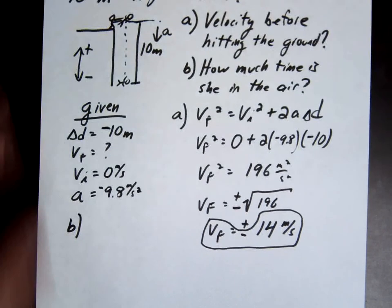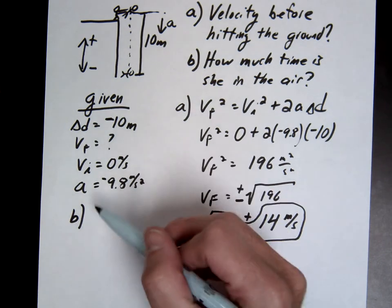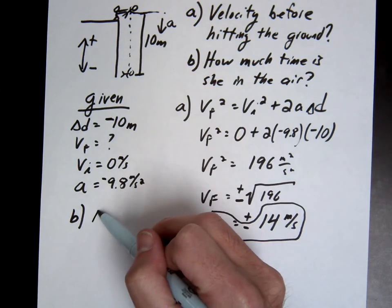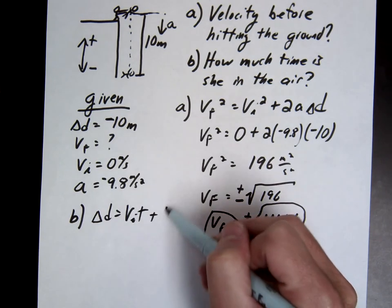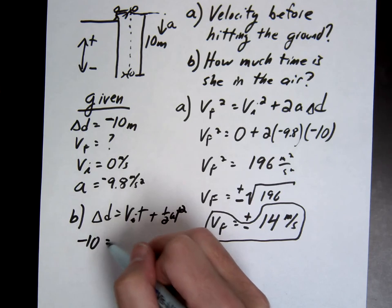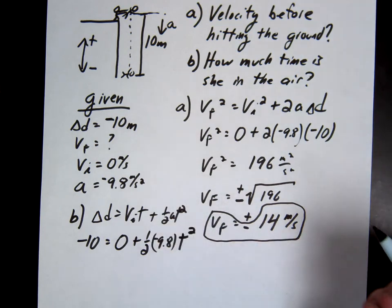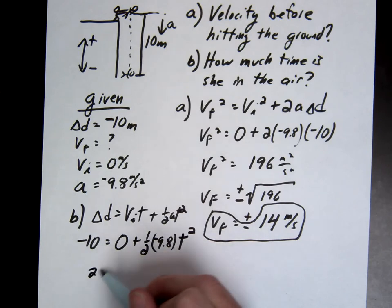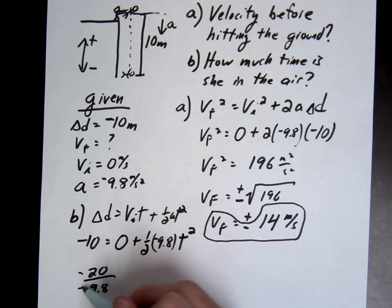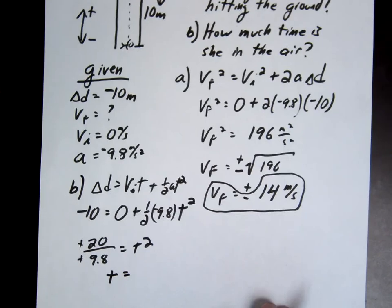So you guys should be able to figure this one out. Try to choose an equation that doesn't use that V final that we just got. We're going to use one, two, or three, or four. All right, let's use this one. So negative 10 equals 0 plus one half negative 9.8 T squared. So that gives us, multiply by 2, 20, divide by 9.8, negative negative becomes positive positive, equals T squared.